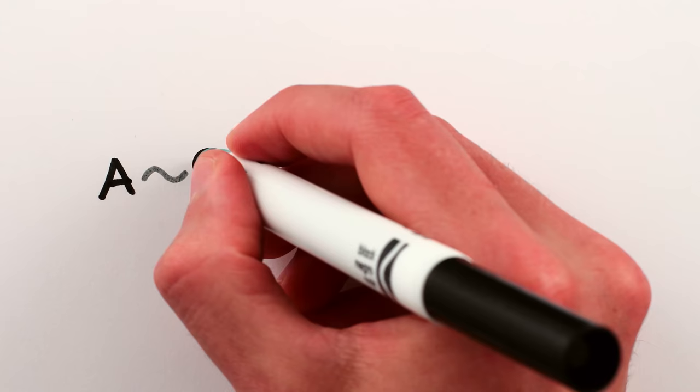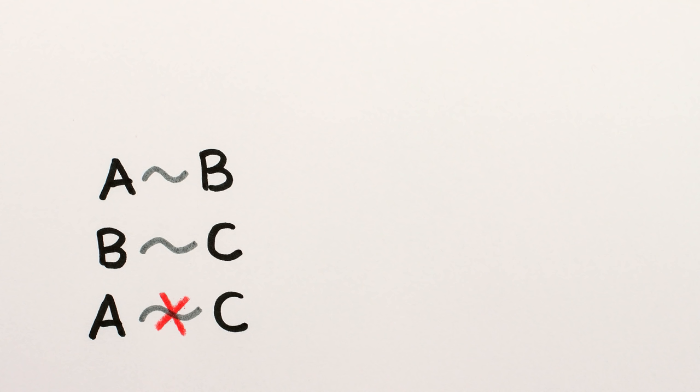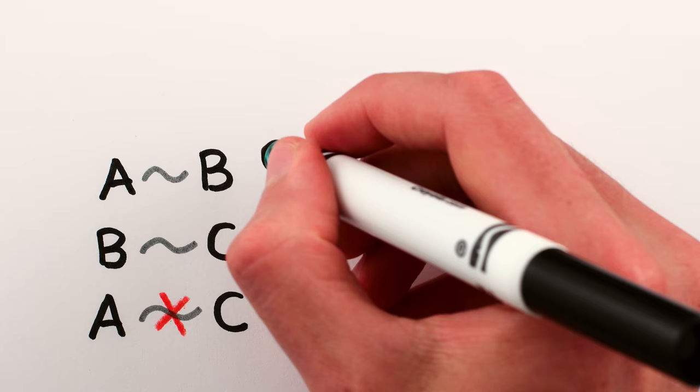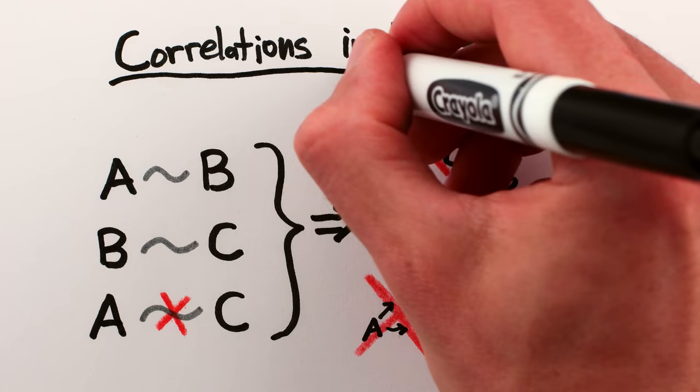Of course, this is just a simple example, but for any group of things, you can use the various correlations between them – or lack of correlations – to eliminate some of the possible cause and effect relationships. And that's how correlations can imply causation.